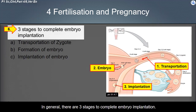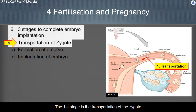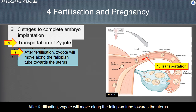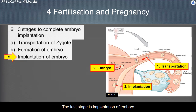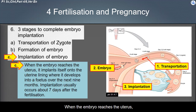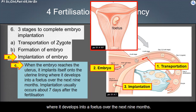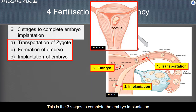In general, there are three stages to complete embryo implantation. The first stage is the transportation of the zygote — after fertilization, the zygote will move along the fallopian tube towards the uterus. The second stage is formation of the embryo, where the zygote continues to divide and finally becomes a ball of cells called an embryo. The last stage is implantation of the embryo — when the embryo reaches the uterus, it implants itself onto the uterine lining, where it develops into a fetus over the next nine months. Implantation usually occurs about seven days after fertilization.